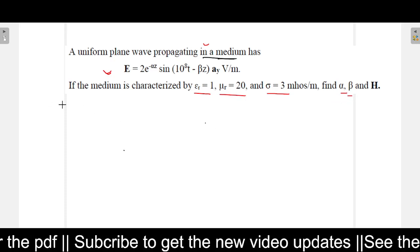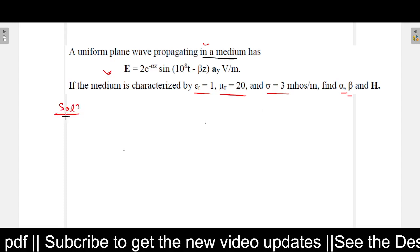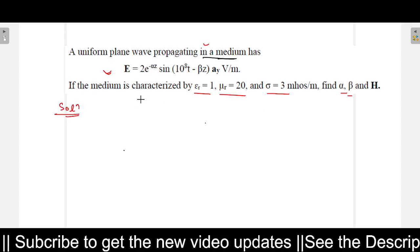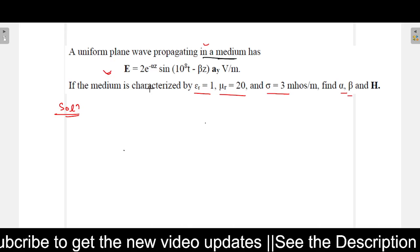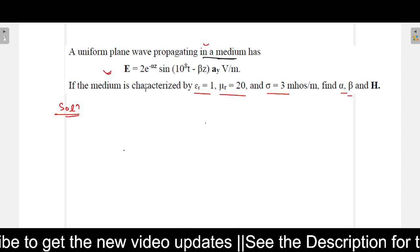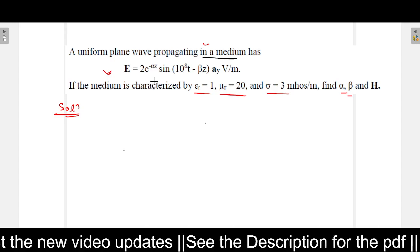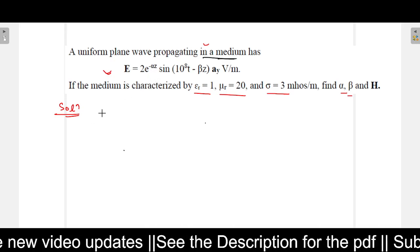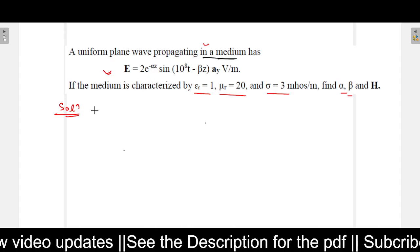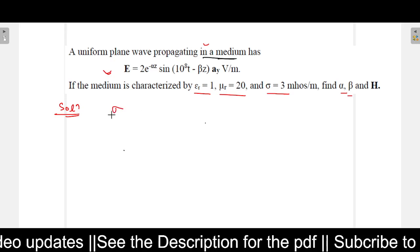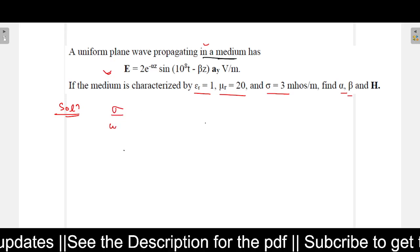Now, to find out this problem, we need to use some formula based on whether the wave is propagating in free space, good conductor, or lossy dielectric. So to know that, we have something called loss tangent. Based on the loss tangent, we have a condition that sigma by omega into epsilon.